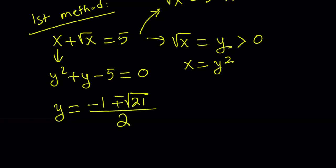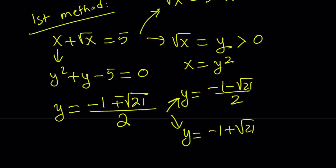So those are the y values, but notice that we get two y values from here. One of them is negative 1 minus square root of 21 divided by 2, and the other one is negative 1 plus square root of 21 divided by 2. Now, the first solution we get is going to be less than 0, because the numerator is a negative value. Therefore, we're not going to accept it, because remember, we said that y has to be positive.